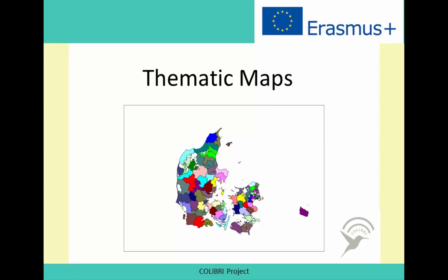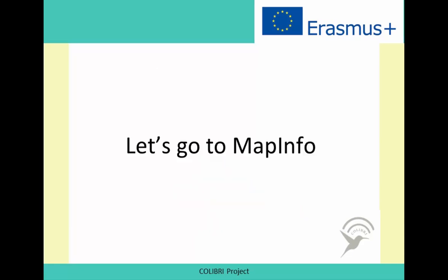For example, as we can see here in this map, we have a thematic map based on the Danish municipalities where we can clearly distinguish their shape by different colors. Let's go now to MapInfo.